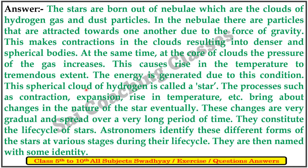The spherical cloud of hydrogen is called a star. The processes such as contraction, expansion, and rise in temperature bring about changes in the nature of the star eventually. These changes are very gradual and spread over a very long period. They constitute the life cycle of stars. Astronomers identify the imprint from a star at various stages during their life cycle and name them with some identity.